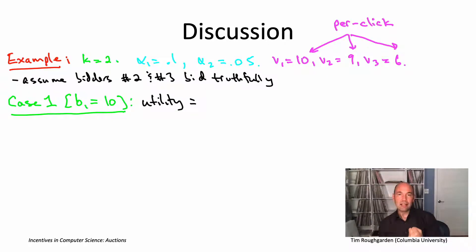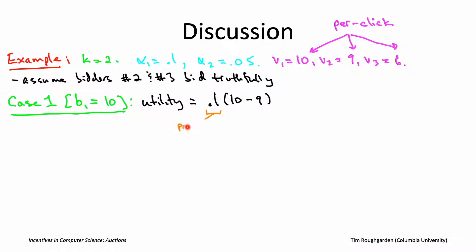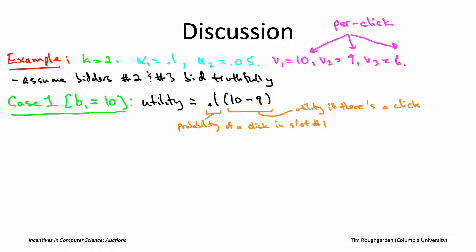What will it have to pay? It'll have to pay the second highest bid, which in this case is nine. That was the bid of the bidder in the second slot. The overall utility for being shown in slot one of this search results page is 10%, or 0.1, times that difference. 10, the valuation, minus nine, the payment. This quantity, of course, is also known as 0.1.